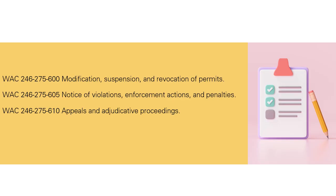We'll start with Part 6. It has only these three sections: Section 600, 605, and 610 — Modification, Suspension, and Replication of Permits; Notices of Violation, Enforcement Actions, and Penalties; and Appeals and Adjudicated Proceedings.